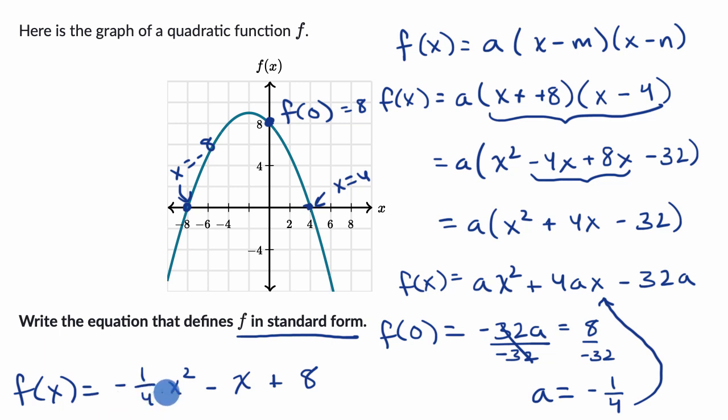And we can verify again that when x equals zero, our function is indeed equal to eight. But we are done. We have written this equation now in standard form. We started with general factored form. We used the x-intercepts to figure out what m and n are. Then we used the y-intercept to figure out what a is. And when we multiplied everything out, we got it in standard form.